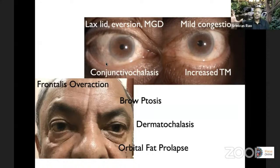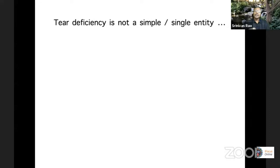We're going to start with tear problems of the surface, as that is one large component of ocular surface problems. But don't believe that every patient who comes with irritation has only a tear problem. He probably has a tear problem, but he also has a number of other things going on. We need to pick these up to treat them properly.